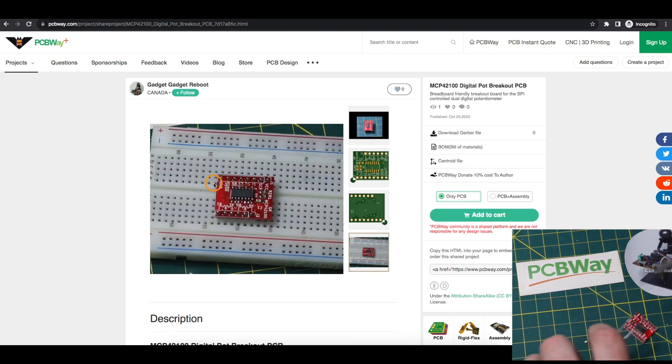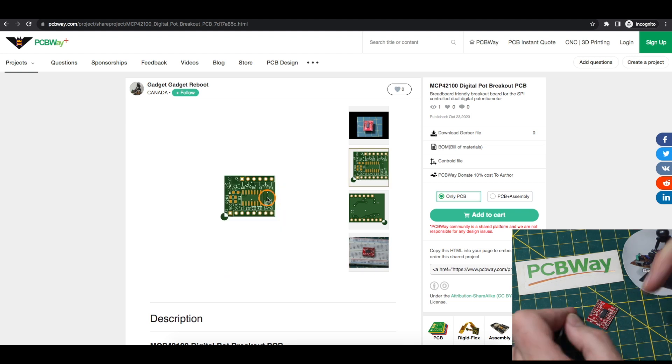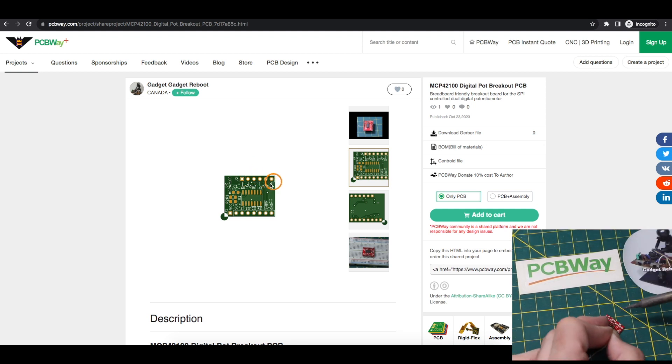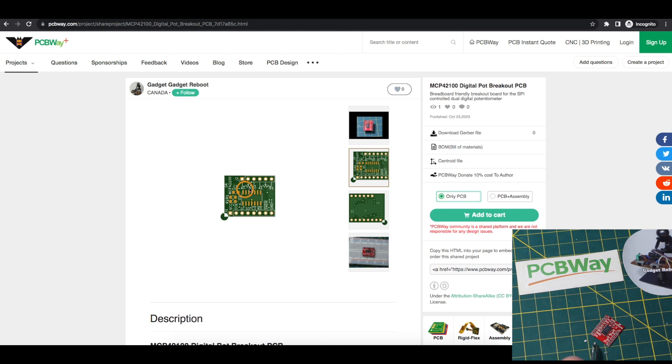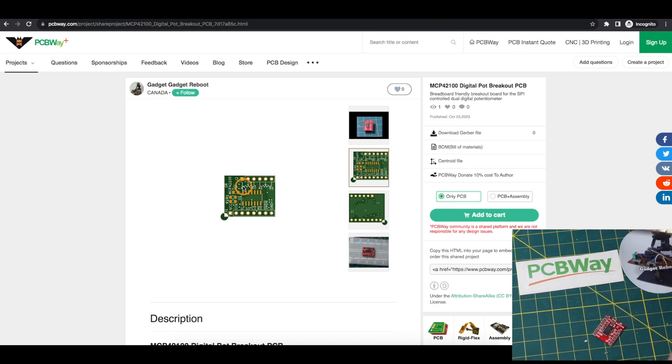I set up the pin spacing so it would easily dock into a breadboard and have space to plug in other wires. Or if there's no breadboard, then DuPont headers can be just plugged into the pins on this module. And since this is the dual pot chip, I have the two potentiometers right here with the labels for pot 0 and 1, A and B, and wiper terminals, with a schematic symbol for easy hookup.